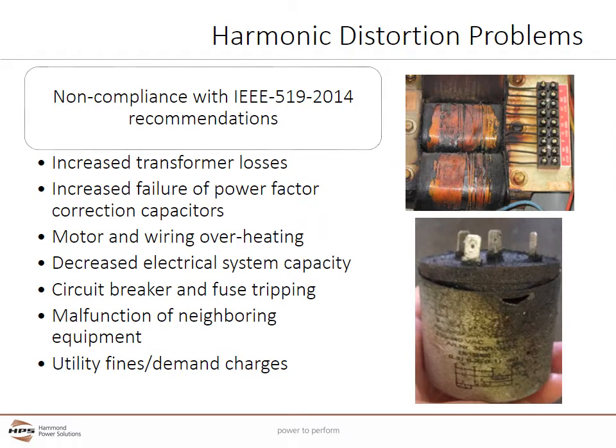IEEE 519, of which the most current version is 2014, is a document that establishes levels of voltage and current harmonic distortion acceptable to the distribution system, based on the input transformer characteristics and the loads in a customer's facility. Many electrical consultants are including compliance with IEEE 519-2014 in their design specifications to help reduce harmonic problems and avoid penalties that can be imposed by electrical utilities. More information about the levels of harmonics can be found on the IEEE website.